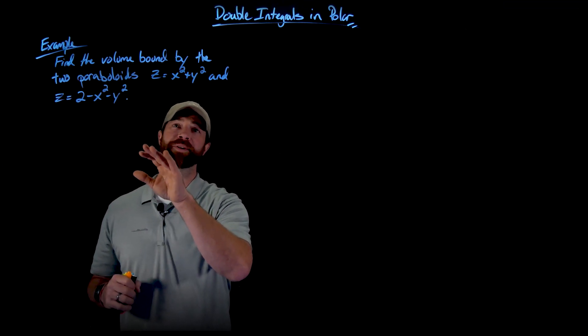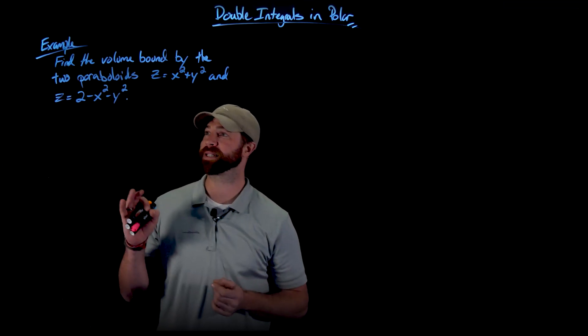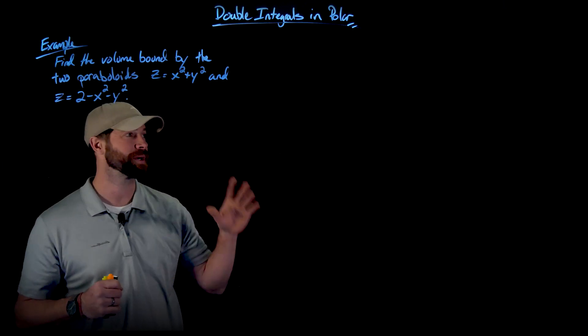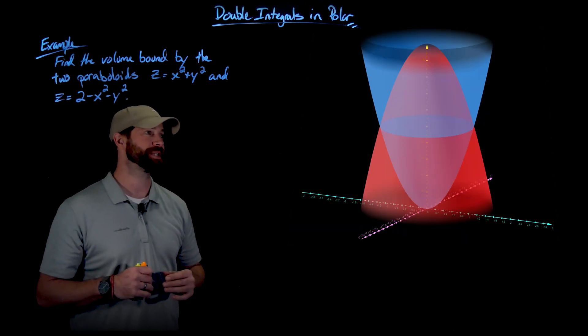Here we have z equals x squared plus y squared and z equals 2 minus x squared minus y squared. So let's look at the visual representation here.